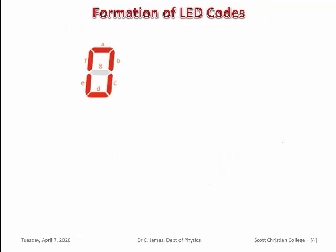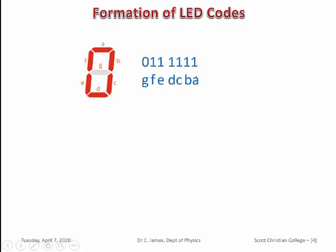We have to form the hexadecimal LED code to display a number. To display 0, segments A, B, C, D, E, and F should be energized while G is given 0 voltage. This gives the binary pattern where the equivalent hexadecimal number is 3F. If we output 3F from the microprocessor to the LED display, the digit 0 will be displayed. That is why we call it an LED code.